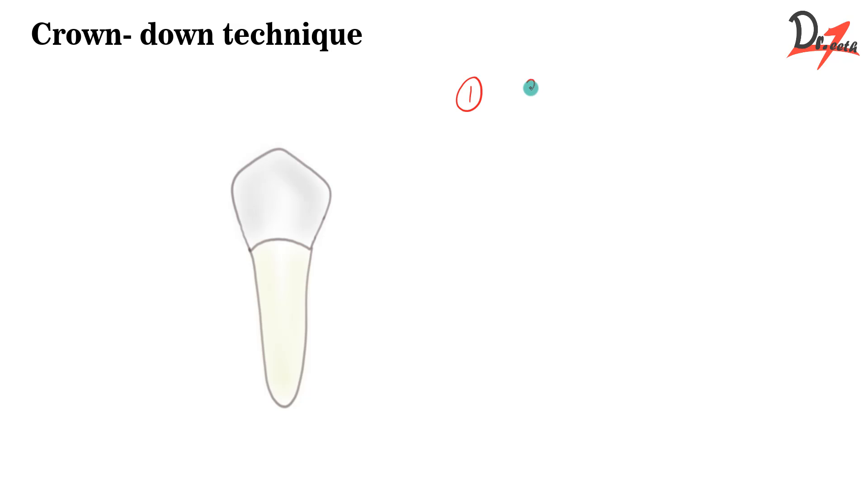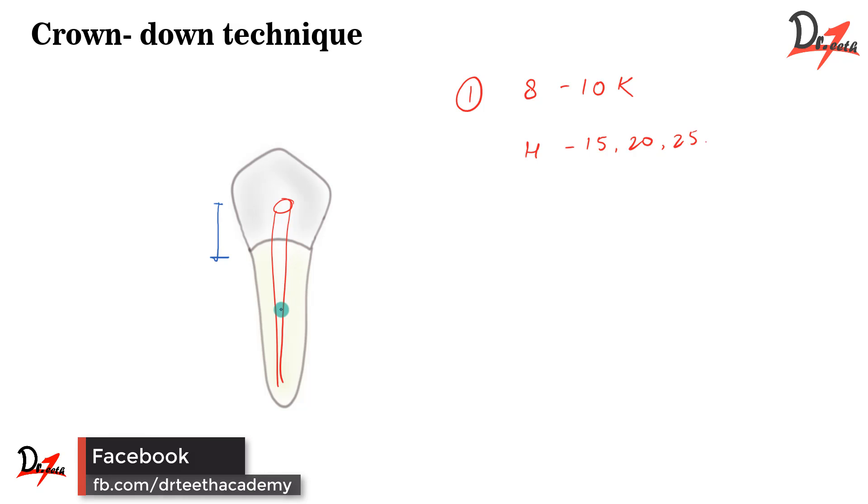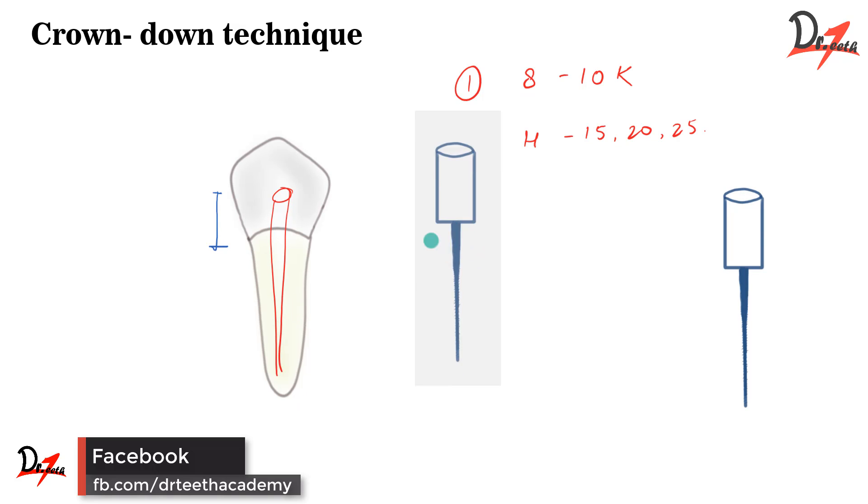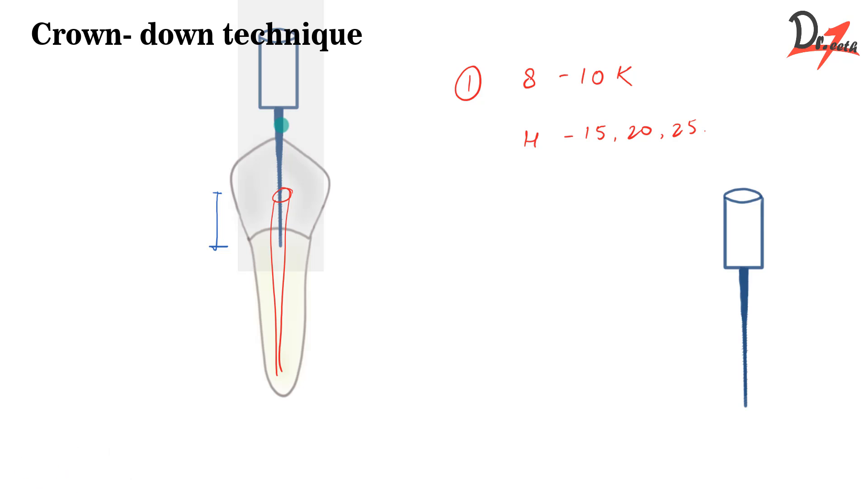The first thing is that we take 8 or 10 K file and we establish the patency of the canal. Then what we do, we take file number 15, 20, 25 and we prepare the coronal two-thirds. We prepare the coronal two-thirds up to the point where the file starts binding, meaning the file cannot go further inside. So let's suppose this is a file and we have to go to a working depth until the file starts binding, or it is usually around 16 to 18 mm according to Grassman.